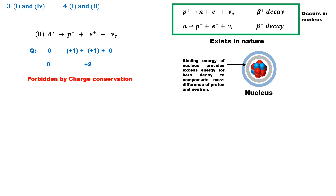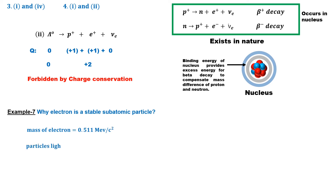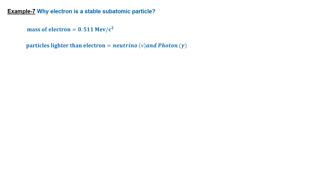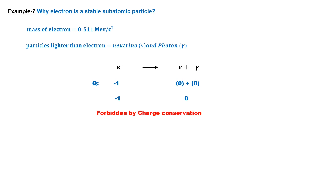Studying these two conservation laws explains why the electron is a stable particle. By energy conservation, if the electron were to decay, it could only decay into particles lighter than itself — namely the neutrino (near-zero mass) and the photon (massless). However, both the neutrino and photon are neutral particles, while the electron carries negative charge. Decaying into neutrino and photon would violate charge conservation. Therefore, energy and charge conservation together never allow the electron to decay into any other particle, making it stable.